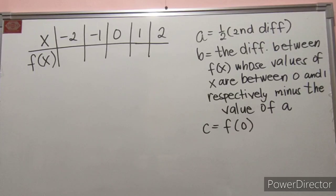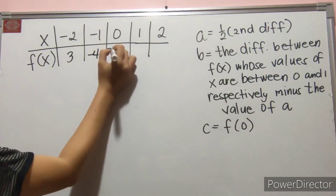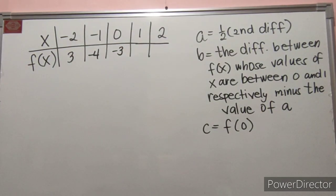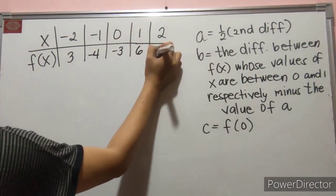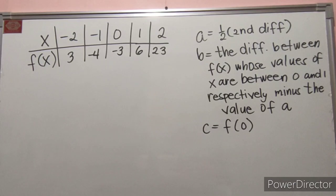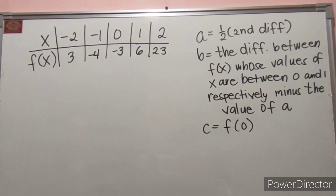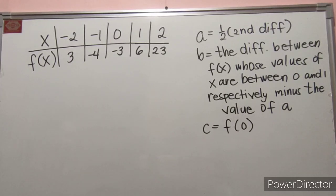Another example — deriving the quadratic function given the table of values. By the way, this way of deriving the quadratic function given the table of values ay ginagamit lang kapag ang ating value for x ay consecutively lang. Kapag hindi consecutively, iba rin yung ating formula in finding our A, B, and C. But somehow, may pagkakapareho din naman. Ito ang aking ipapaliwanag or bibigyan kayo ng example.